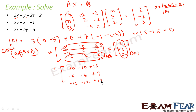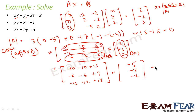This becomes: first entry −20 + 15 = −5, second entry −12 + 9 = −3, third entry −24 + 8 = −6. Since adjoint(A)·B is not equal to 0 and determinant of A is 0, we can conclude there is no solution — the system is inconsistent.